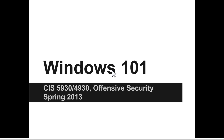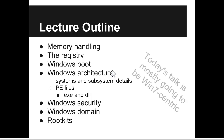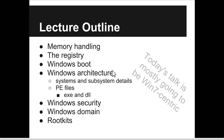We're going in depth into how rootkits take over a Windows system. We're going to start with memory handling, dive into the registry — probably one of the most important parts of Windows — what happens during Windows boot, Windows architecture, Windows security, the Windows domain, and rootkits.